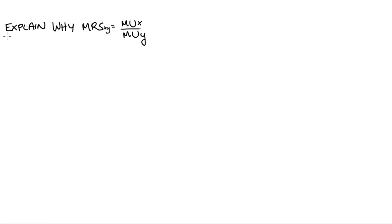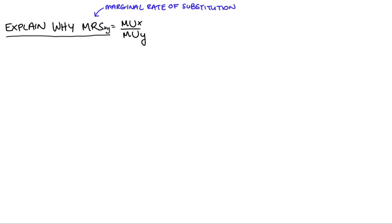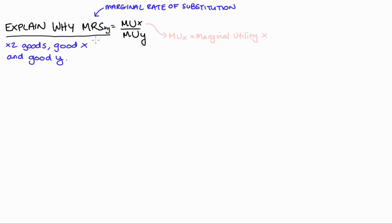Hi everyone! In this video I'm going to explain the equation of our MRS, our marginal rate of substitution, between two goods — just good x and good y. We find our MRS by taking the marginal utility associated with good x and dividing that by the marginal utility of good y. So I'm going to derive this formula in this video.